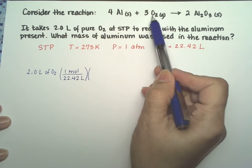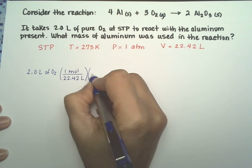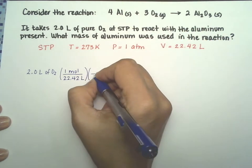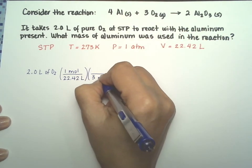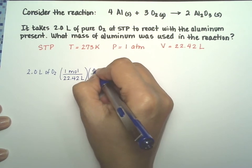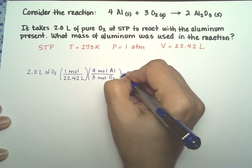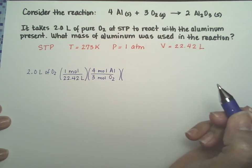Three moles of oxygen gas are going to react with four moles of aluminum. So I can go from moles of oxygen to moles of aluminum. Three moles of O2 reacting with four moles of aluminum. Almost there.